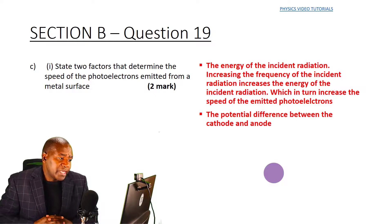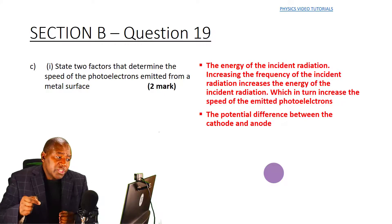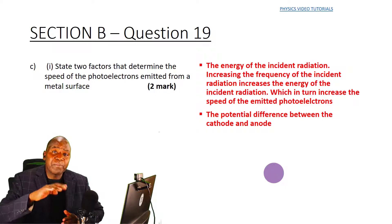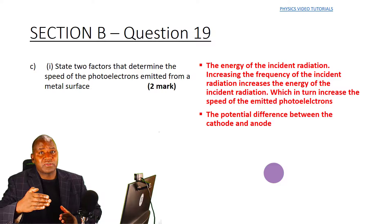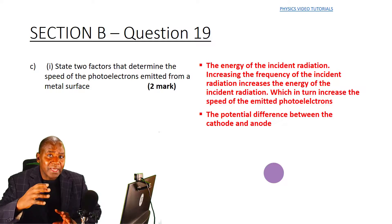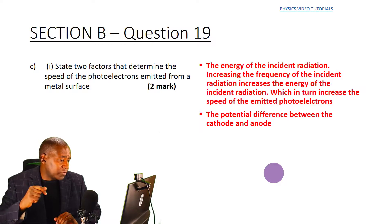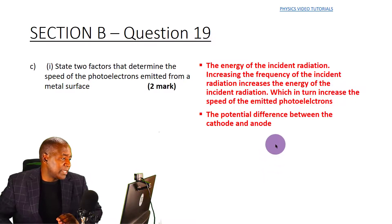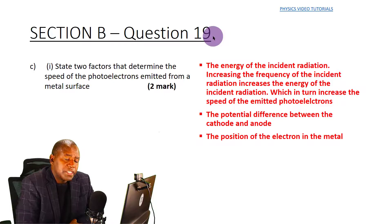So the two main factors are: first, the energy of the incident radiation — increasing the frequency increases the energy, which increases the speed of emitted photo electrons because the excess energy above the work function is converted into kinetic energy. Second, the potential difference between the cathode and the anode.